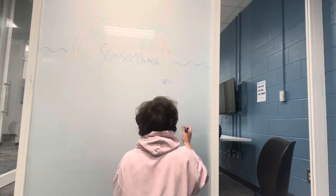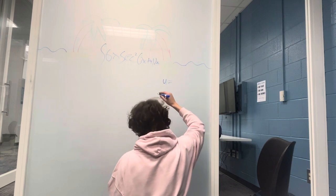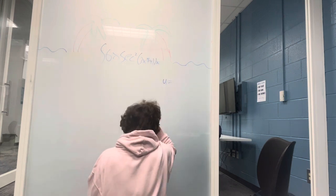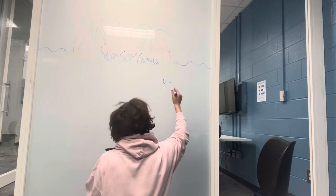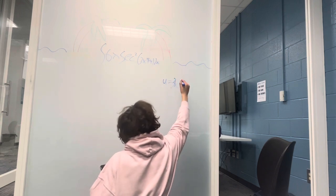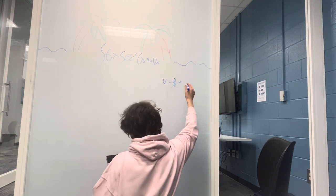And u is going to equal, in parentheses... Oh, I actually forgot a square root there. Square root of 3x squared plus 4.